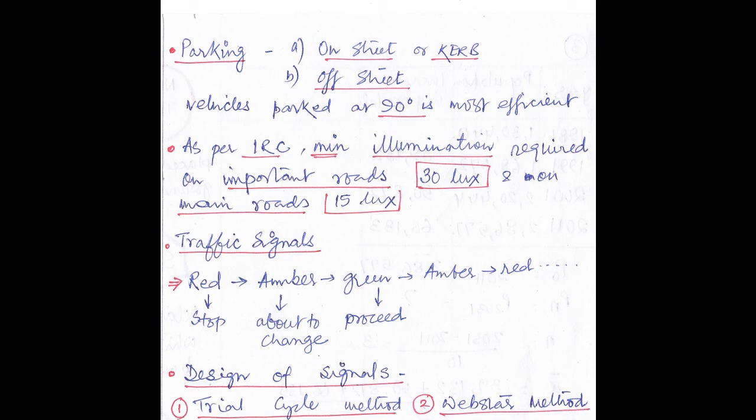Next important point is, as per IRC, the minimum illumination required on important roads is 30 lux, and on main roads it is 15 lux.